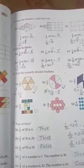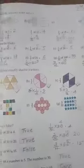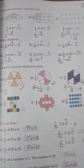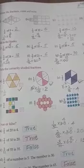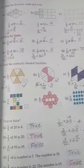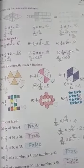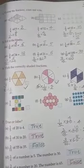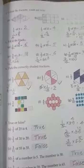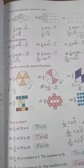So 1 by 4 of 8 is equal to 2. That means 1 by 4 multiplied by 8, we will get 2. So you have to color 2 portions in the given picture.